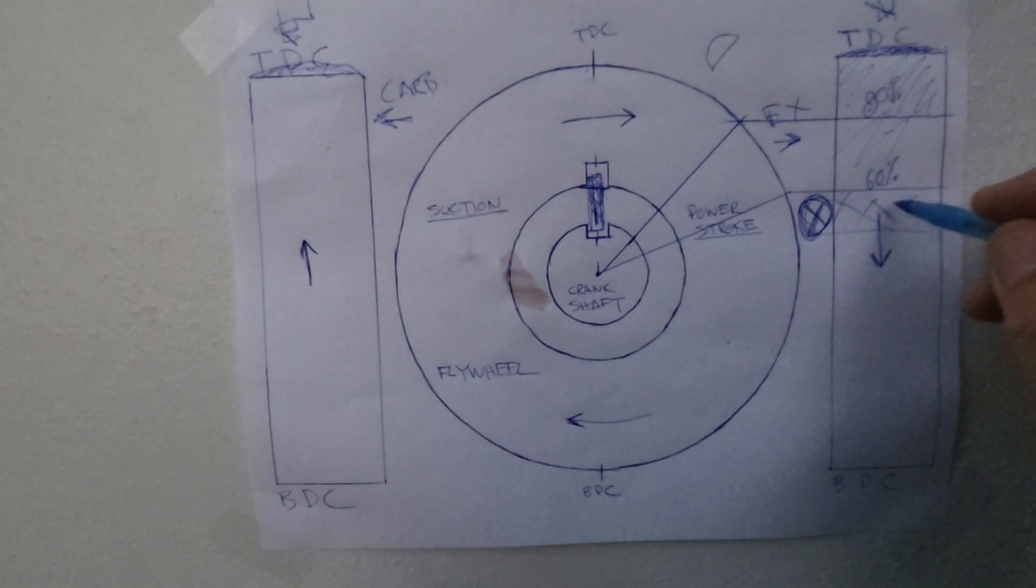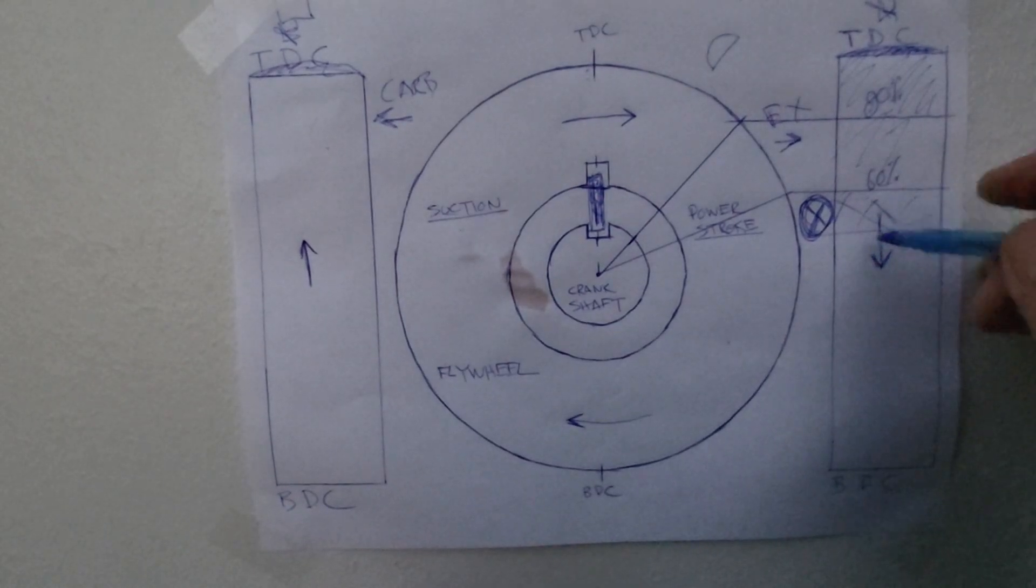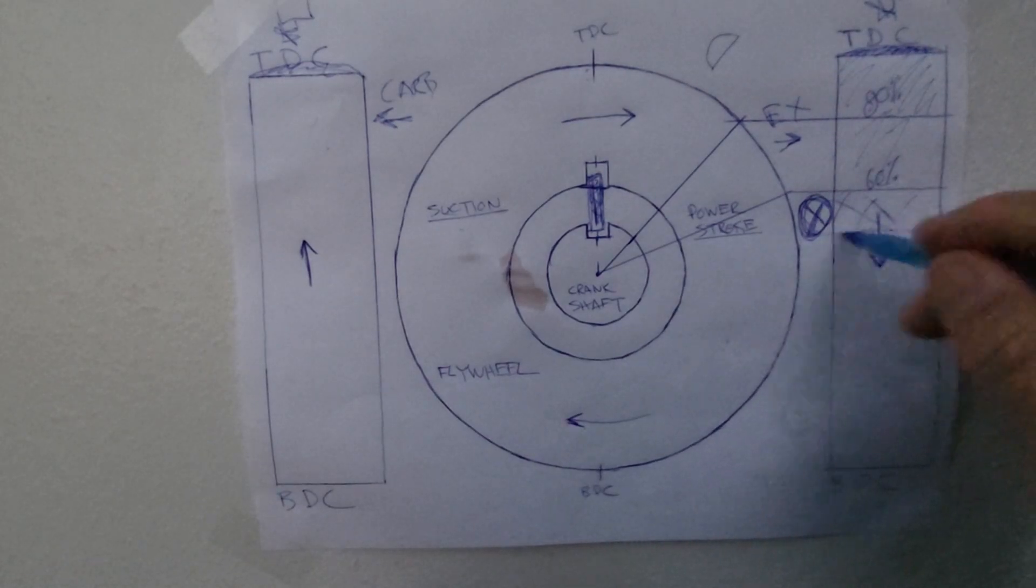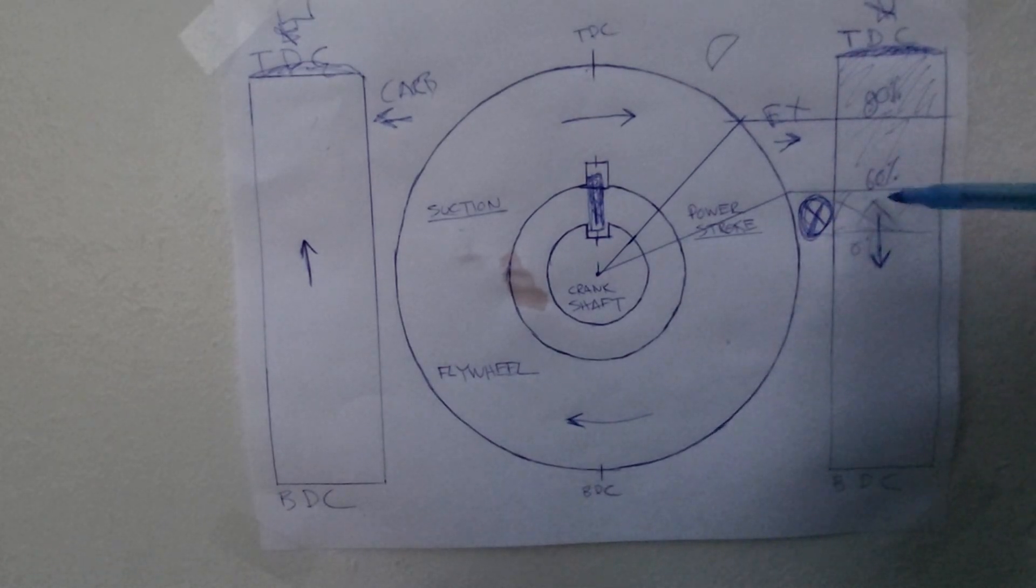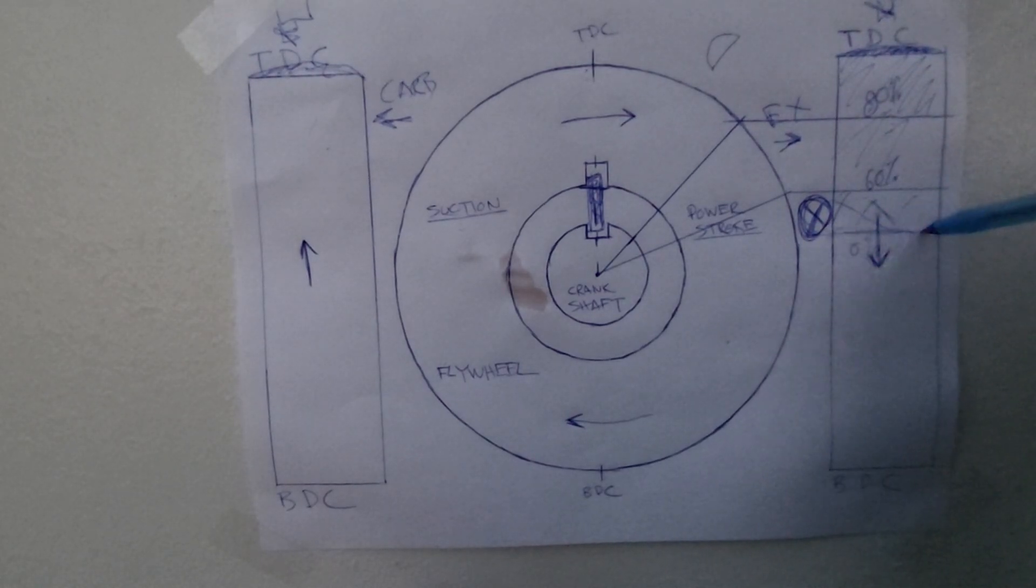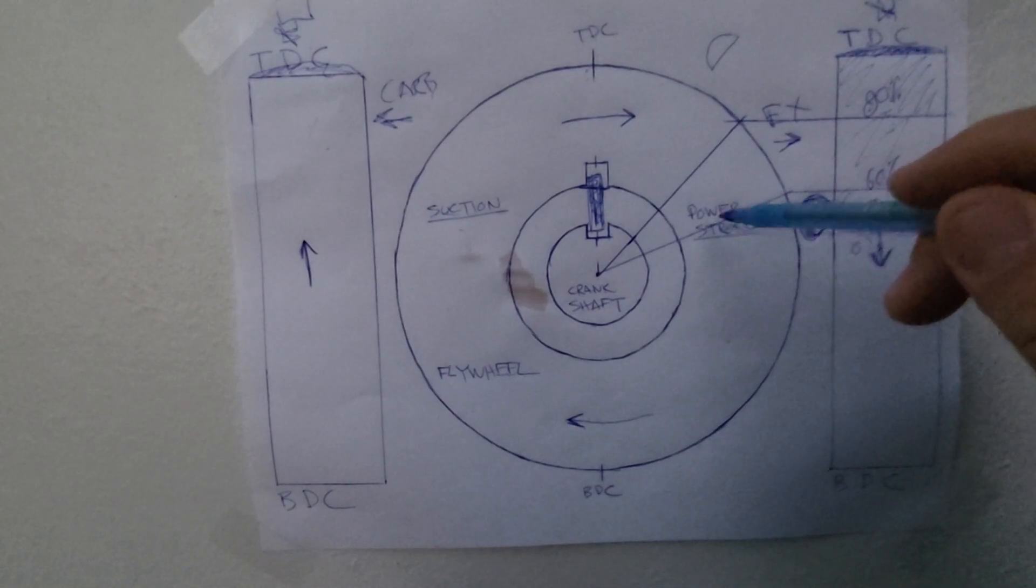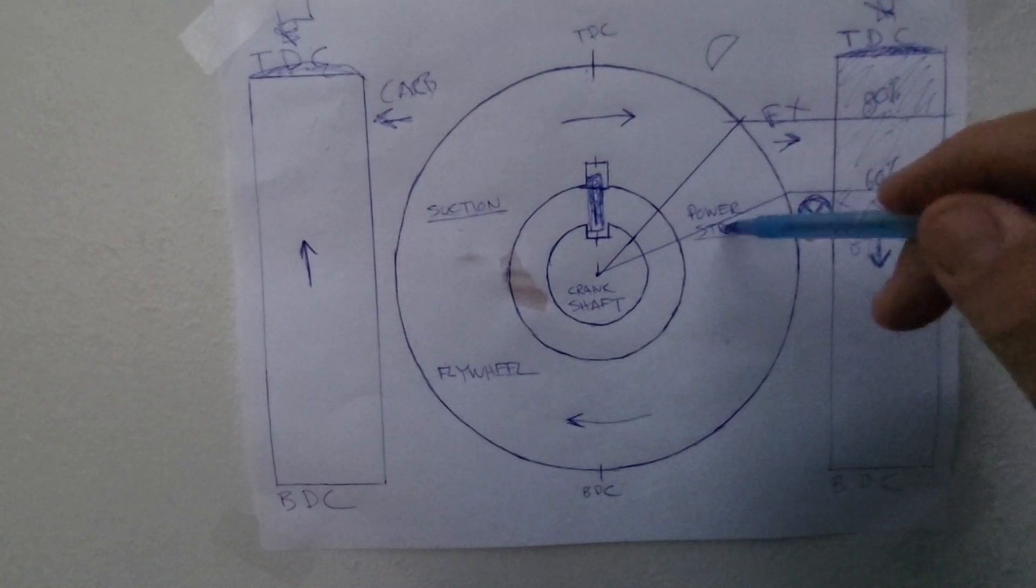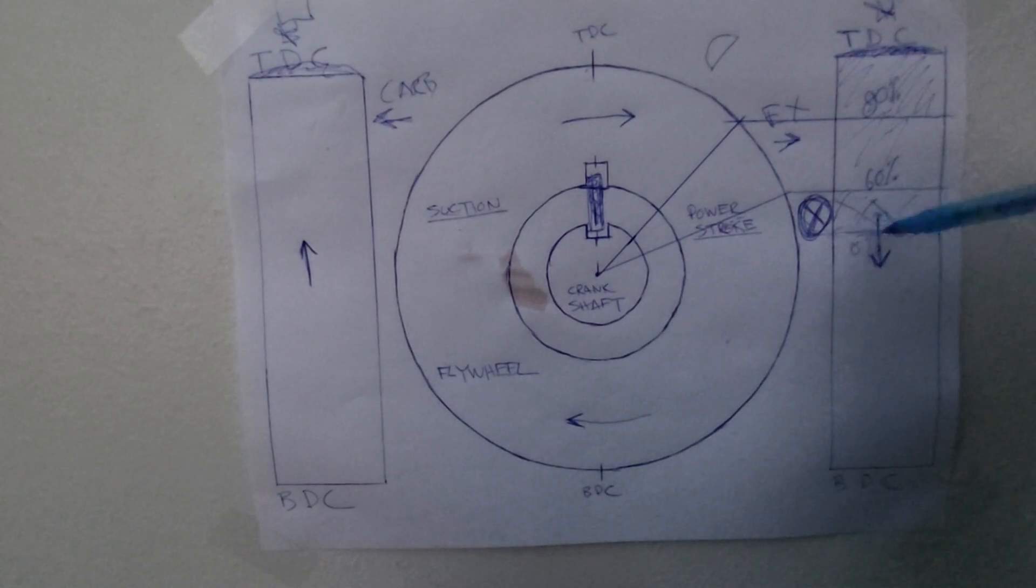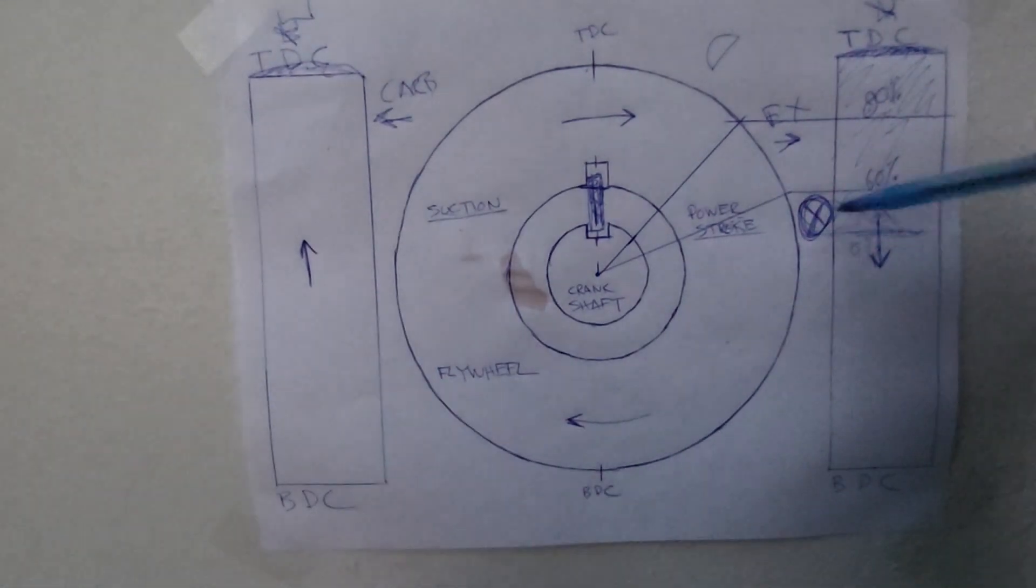So you're going down to like basically 0% by the time that you get to this area right here. Because there is no way that when this ignites at the bottom of the piston opening that you're getting any pressure onto the flywheel or the crankshaft. So you would have no pressure at all.